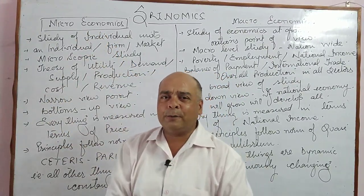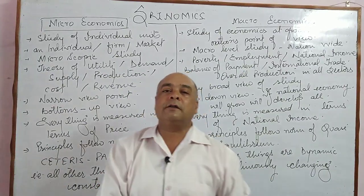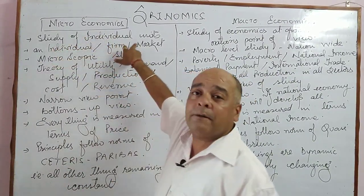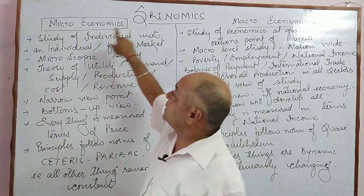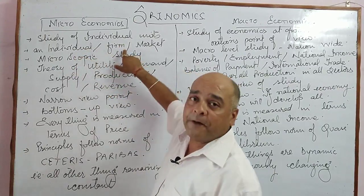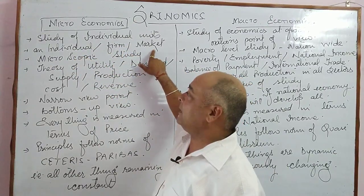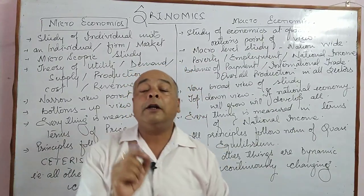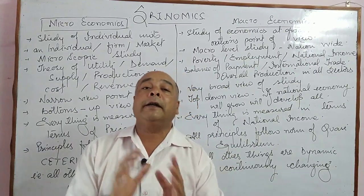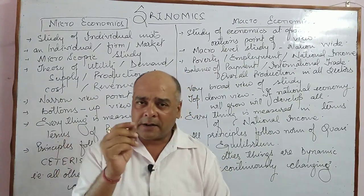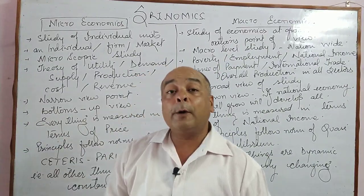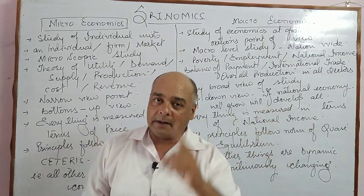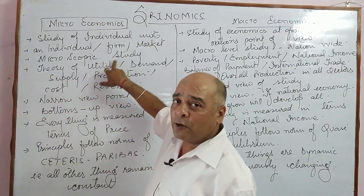Now what is microeconomics? The idea comes from the microscope — when we use a microscope, we study small units, individual units. The same is the idea in microeconomics: we study individual units. These individual units may be an individual, a firm, a particular market, or a particular factory. But every time we are studying one person, one firm, or one market at a time. This is microscopic analysis.